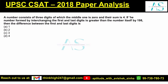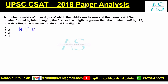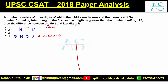A number consists of three digits of which the middle one is zero and their sum is four. For a three-digit number in the form H T U — where H is the hundreds digit, T is the tens digit, and U is the units digit — since the middle digit is zero, the number becomes H 0 U. With H plus zero plus U equal to four, we can proceed further.